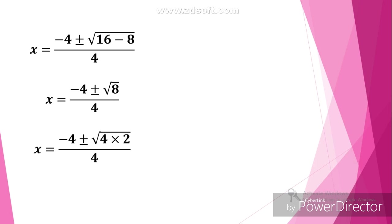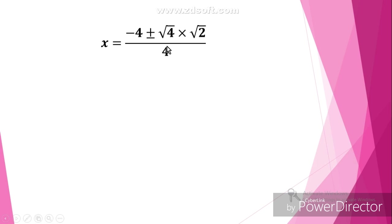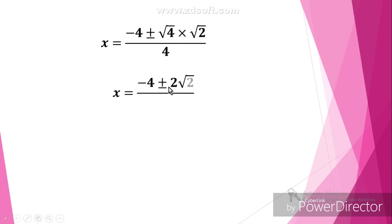Now we can write 8 as 4 times 2 under the root, and separate it as the square root of 4 times the square root of 2. So x is equal to minus 4 plus or minus 2 root 2, divided by 4.